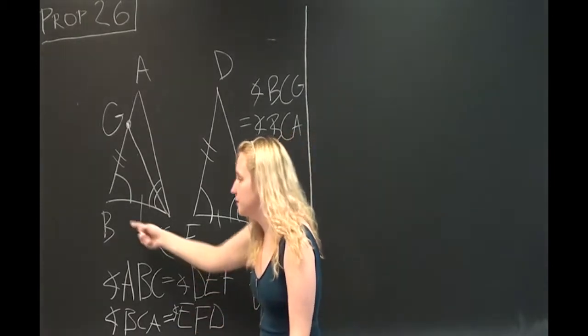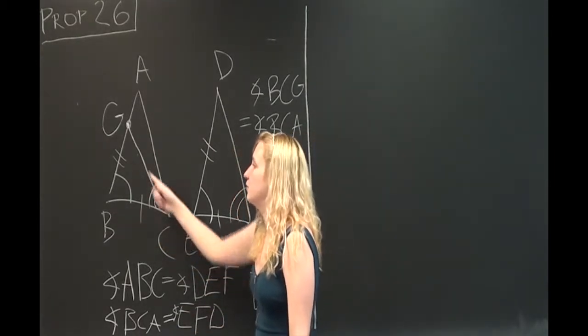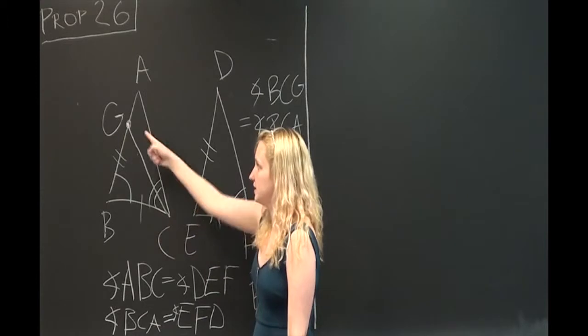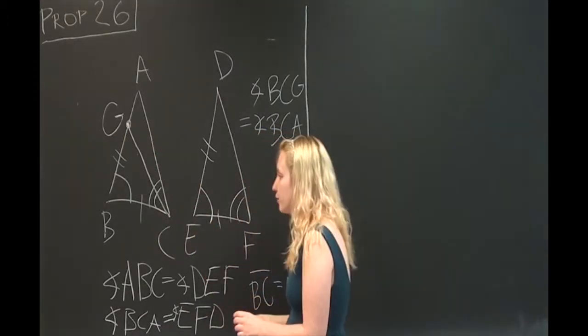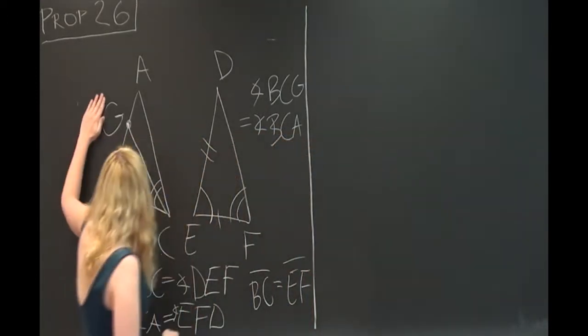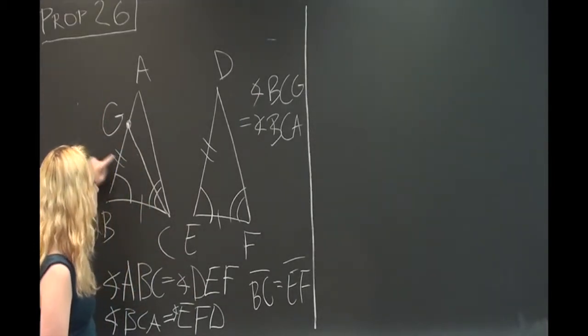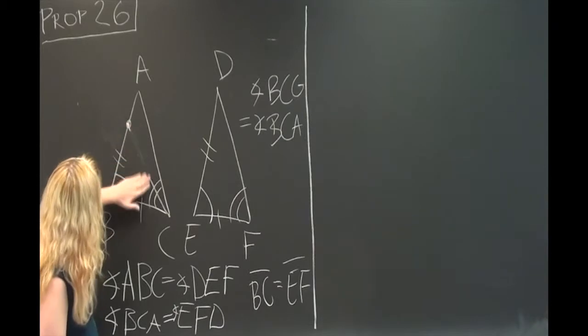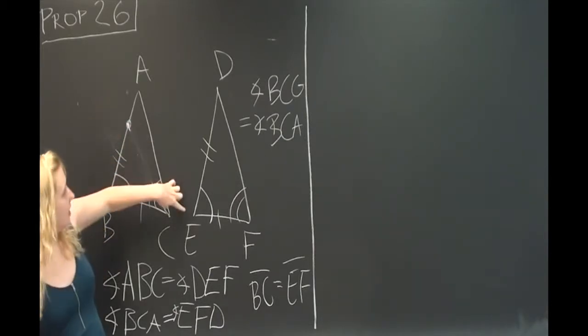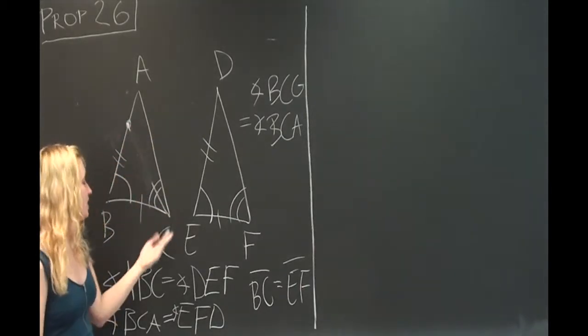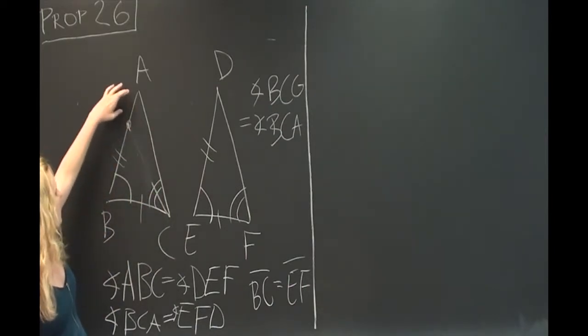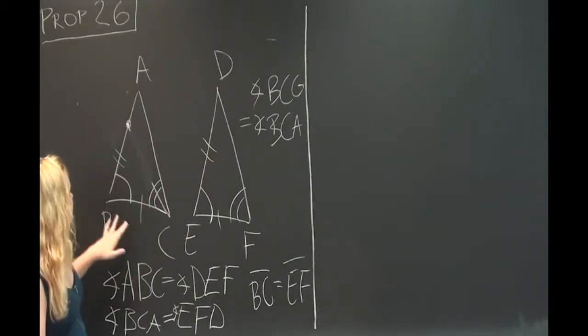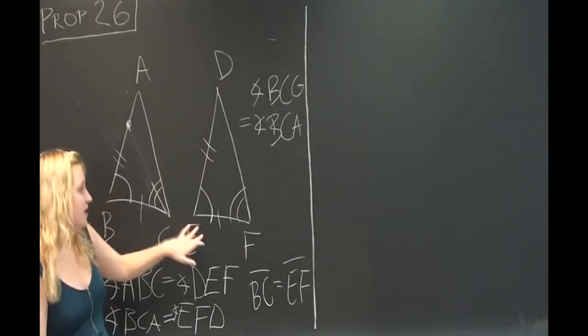However, this is impossible because, as you can see, angle BCG is a part of angle BCA. And therefore, they cannot be equal. So because of that, we know that BG and DE cannot be equal. And instead, BA and ED must be equal. And just as before, we can say because of side, angle, side, that triangle ABC and DEF are equal.